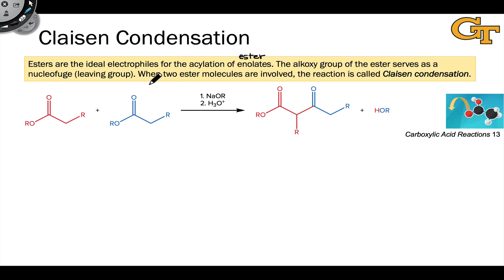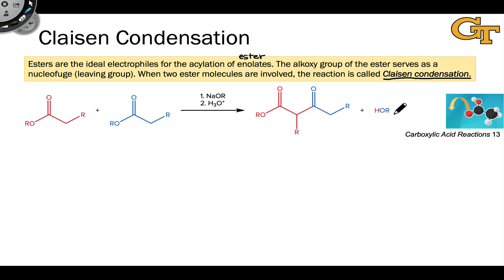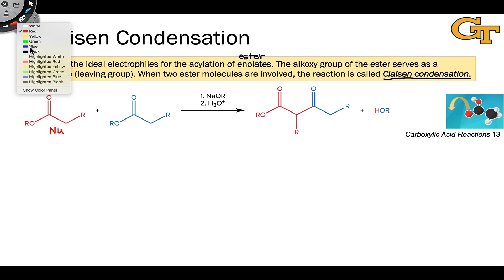For the time being, I want to focus on dimerization — the reaction between two identical ester molecules to form a product of substitution, since the ester contains an internal leaving group in the form of the alkoxy group. When two ester molecules are involved in a reaction like this in the presence of alkoxide base, the reaction is called Claisen condensation. It's called a condensation reaction because a small molecule is given off — the conjugate acid of the alkoxy leaving group. The hallmark of the Claisen condensation is that one of the esters, here the one I'm drawing in red, serves as the nucleophile via an enolate, and the other serves as an electrophile at its carbonyl carbon.